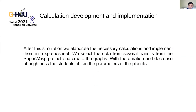Then we can use the light curve to determine the parameters of the planet: its size and temperature. First, we elaborate the necessary calculations and implement them in a spreadsheet. We select data from the SuperWASP project and use the spreadsheet to create graphs. From the duration and degree of brightness decrease, the students can obtain the parameters of the planets.